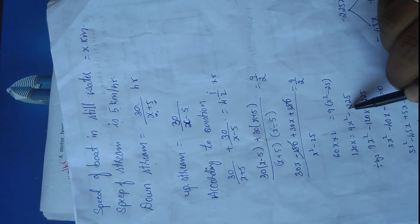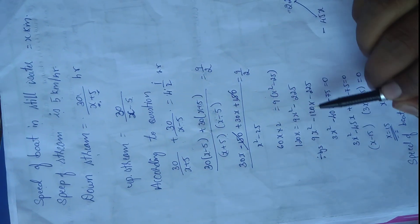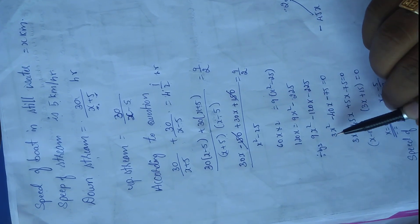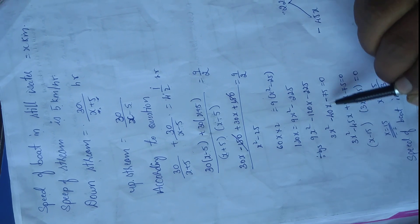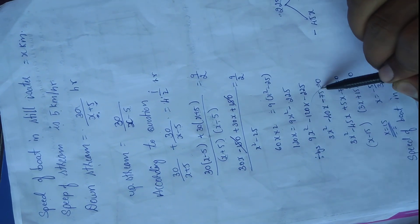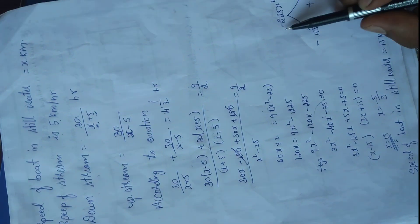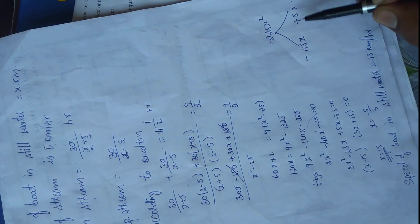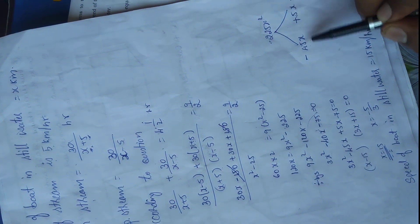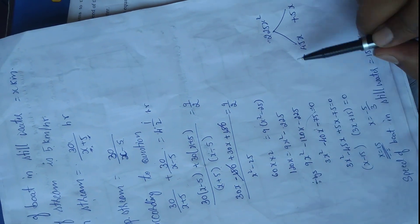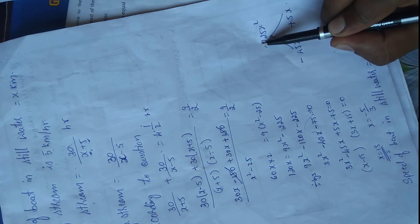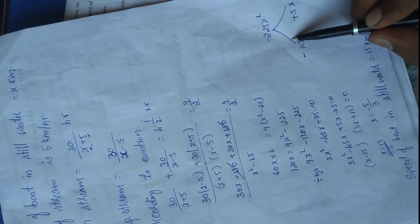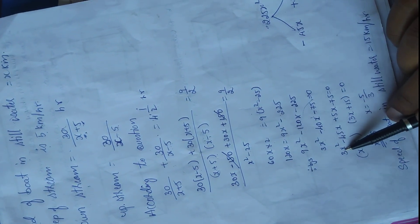This gives us 9x squared minus 225 equals 120x. Since all terms are divisible by 3, we divide through by 3, giving 3x squared minus 40x minus 75 equals 0. To factorize, we multiply 3 and 75 to get 225, and we need two numbers that multiply to 225 and add to minus 40: that is 45 and minus 5.